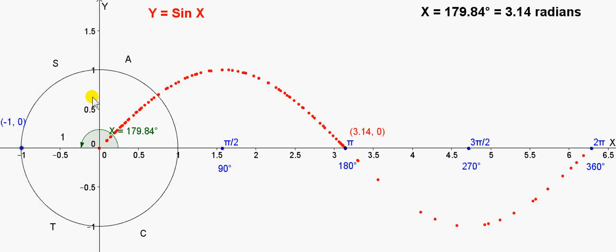In these two quadrants, the sin function is positive. A means all the functions are positive. S means only the sin function is positive in this quadrant.